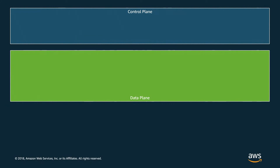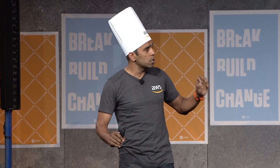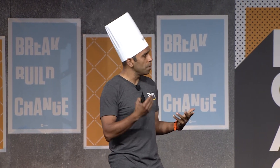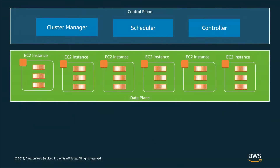Looking deeper at how the data plane and control plane really look: on the control plane layer, there are three main components. There is a cluster manager, responsible for managing the cluster of EC2 instances — making sure instances are up, health checks are maintained, and if an instance goes down, bringing it back up using autoscaling groups. You need a scheduler to place containers on the right node meeting requirements of memory, CPU, affinity, and anti-affinity. And you have a controller, which makes sure that once a pod or container is scheduled, the pod continues to stay up. In the data plane, you have EC2 instances where your containers are running.